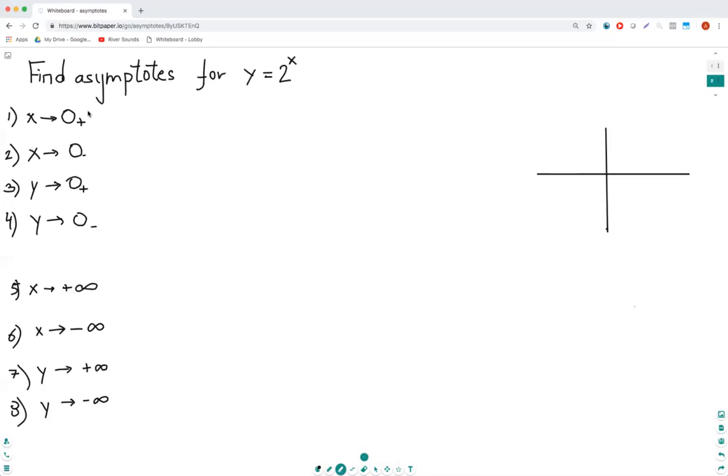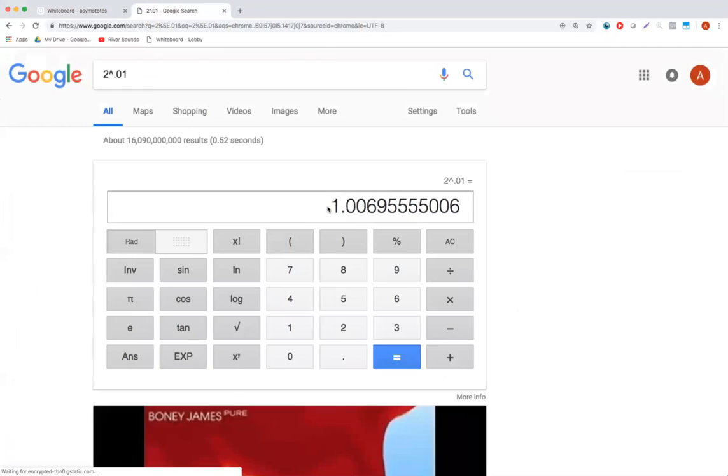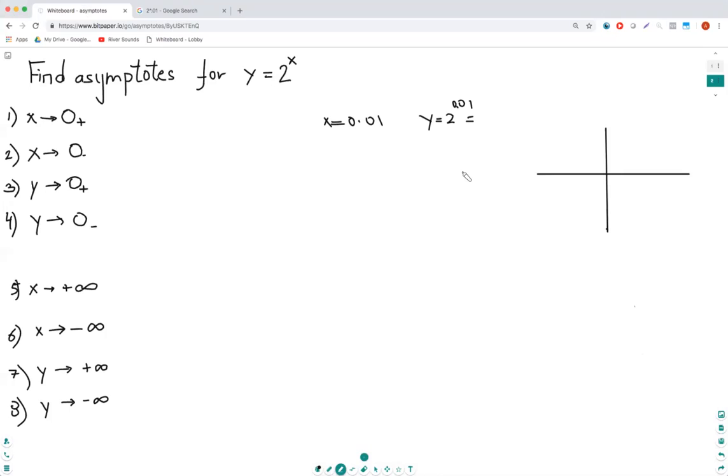The first one is x going to zero plus. So x is a very small number. Let's say I would always take 0.01 to start, and y would be 2^0.01. That would be 1.007. So y is 1.007.